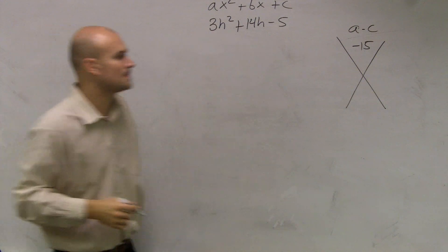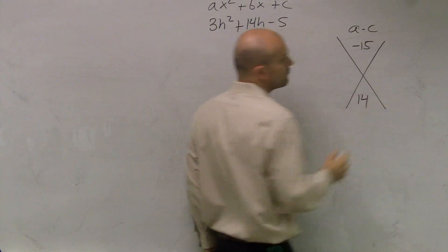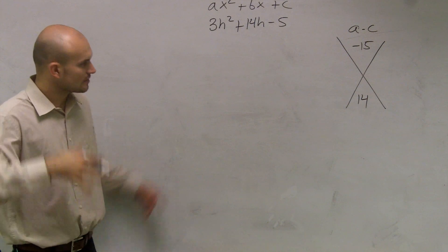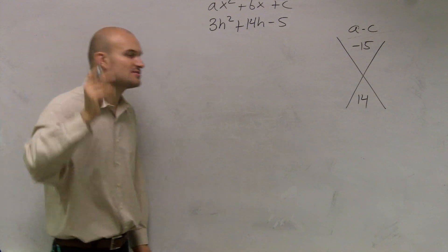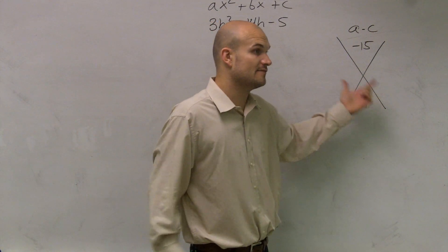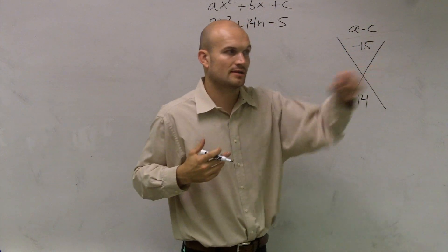Then I go to my b. My b is going to be a positive 14. Now I need to think to myself, what two numbers multiply to give me negative 15, but add to give me positive 14?